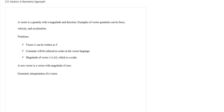Section 2.5 is about vectors — this is the geometric approach, and section 7.5 will cover the algebraic approach, so these two sections go together. A vector is defined as a quantity with a magnitude and direction. Magnitude means the length of the vector, and direction means the angle the vector makes with the positive x-axis or the north direction. Examples of vector quantities include force, velocity, or acceleration.